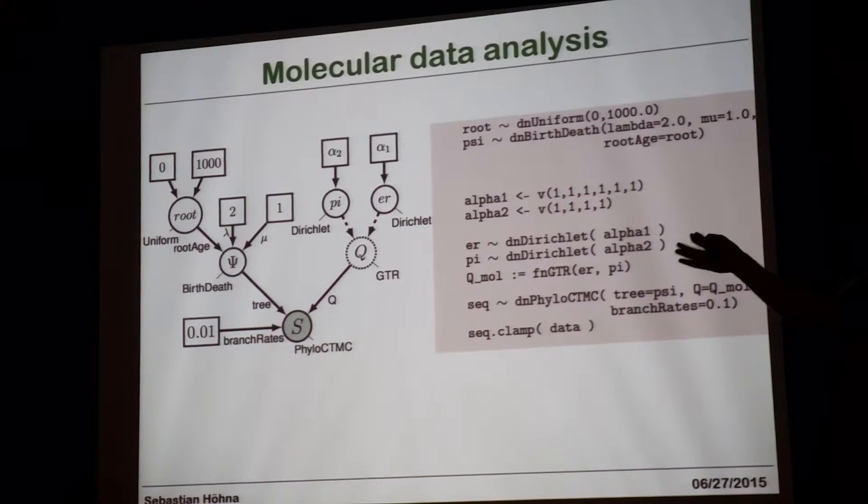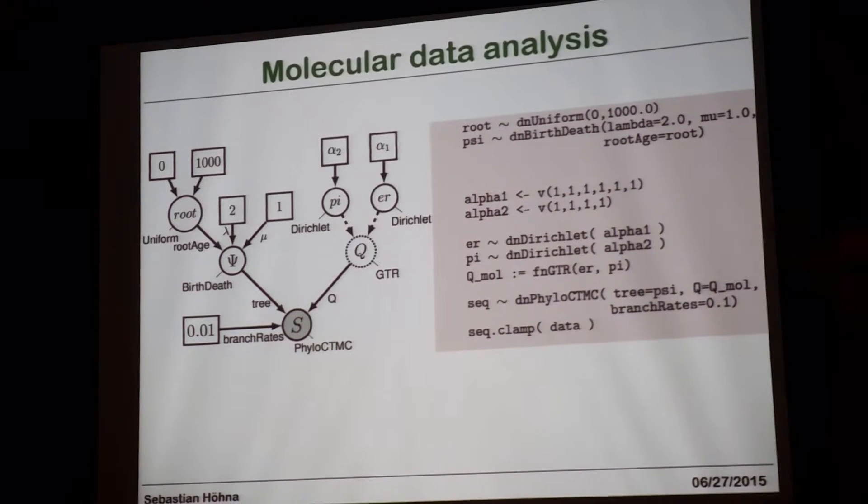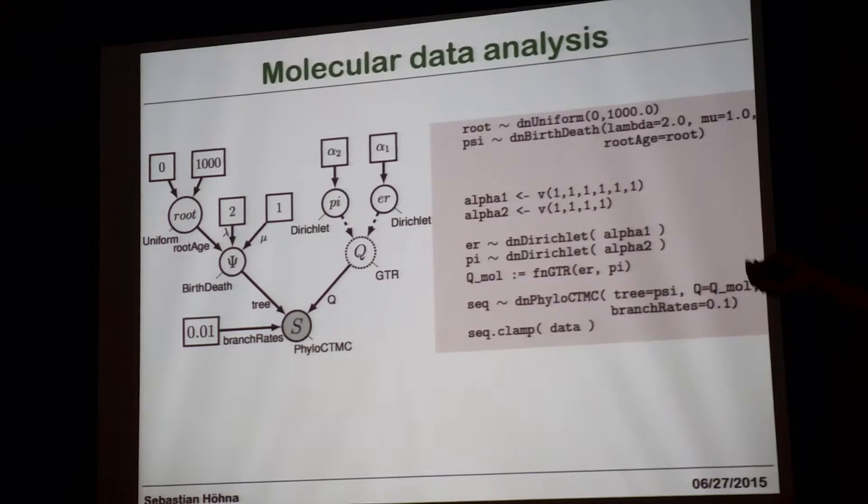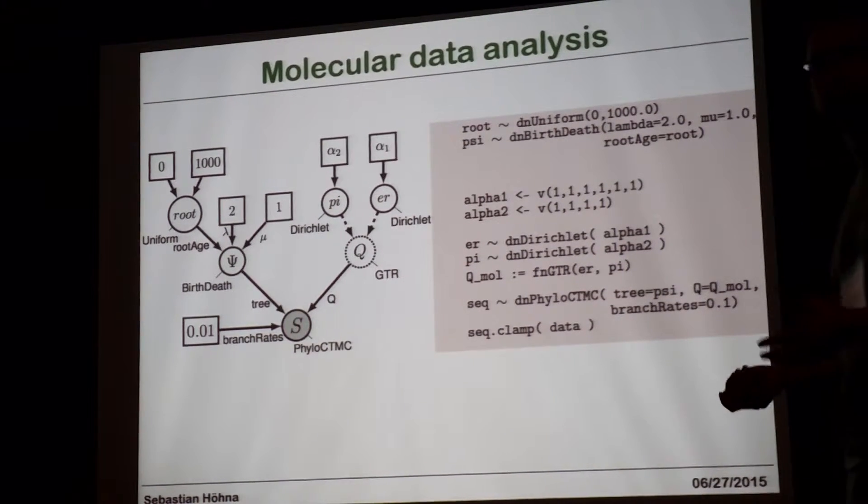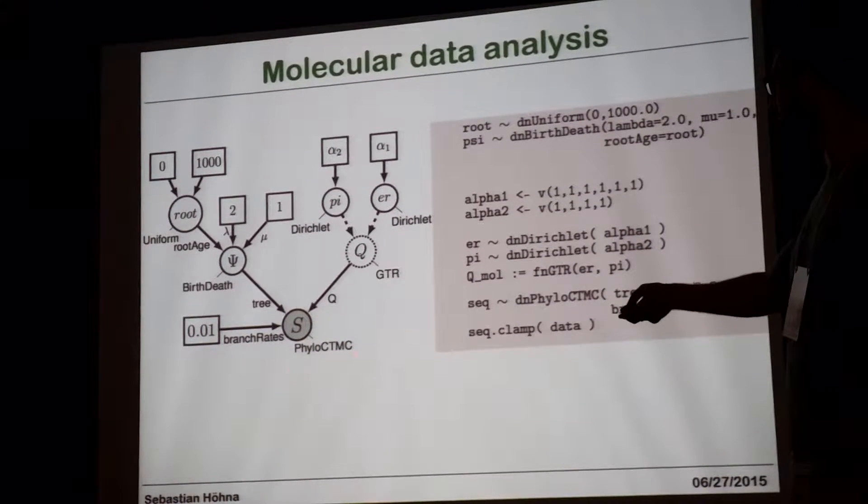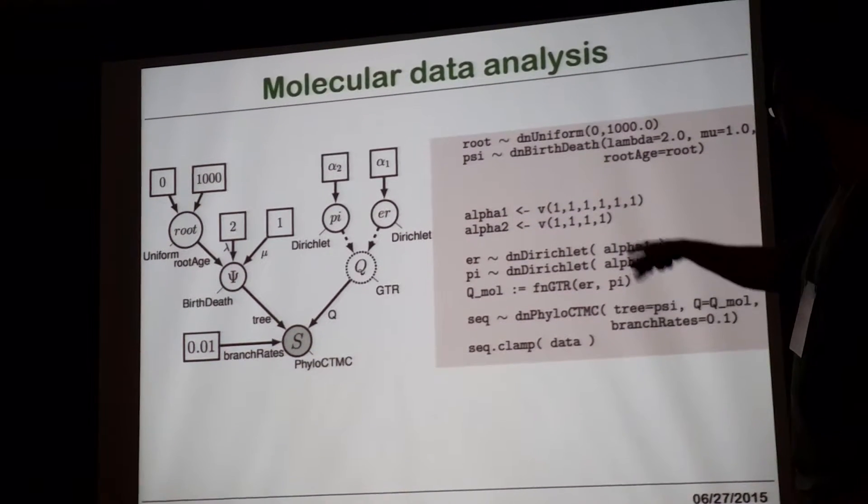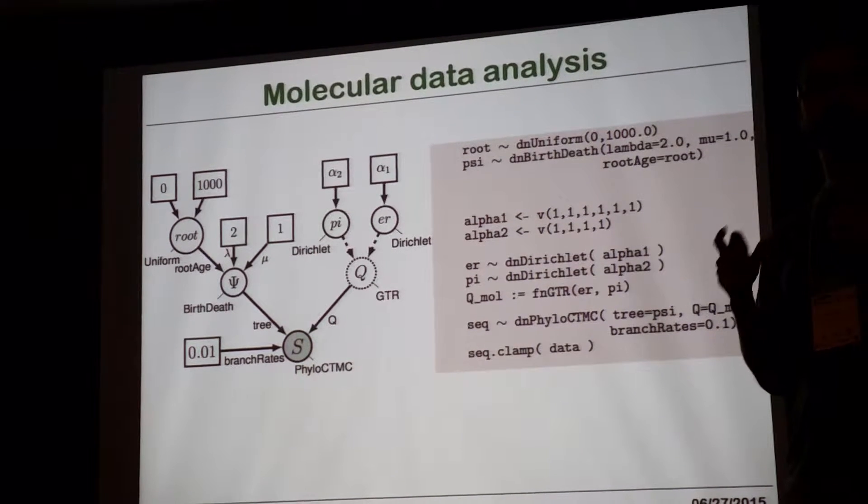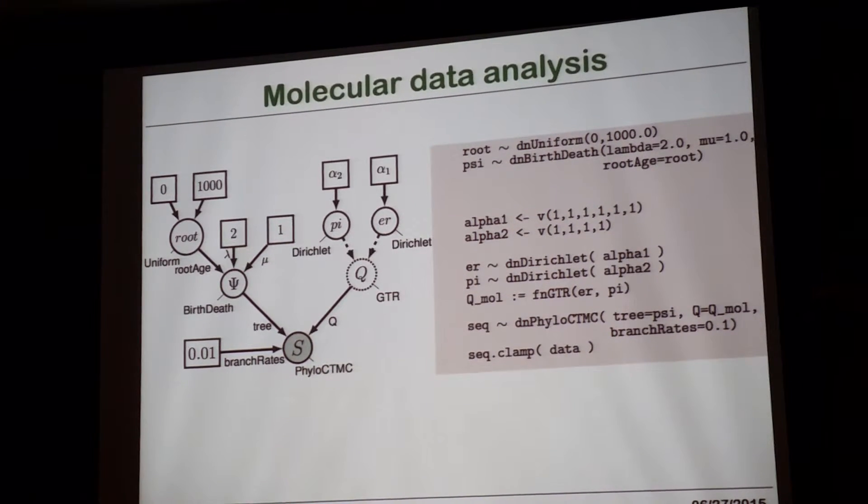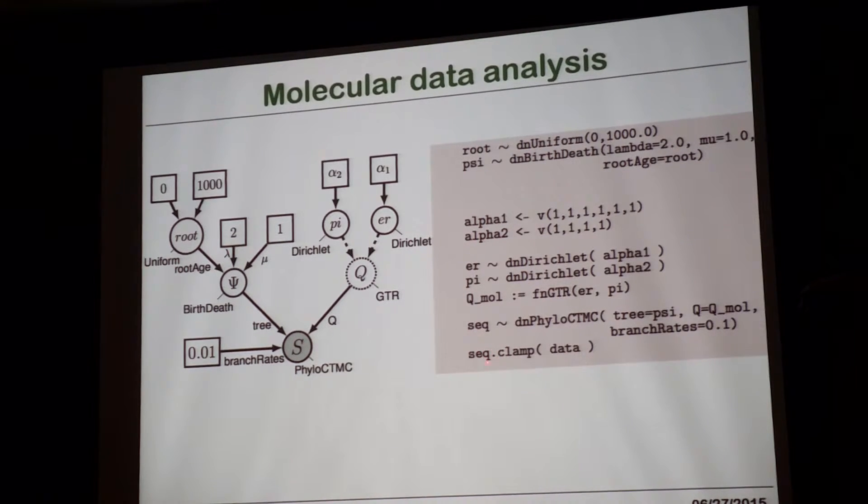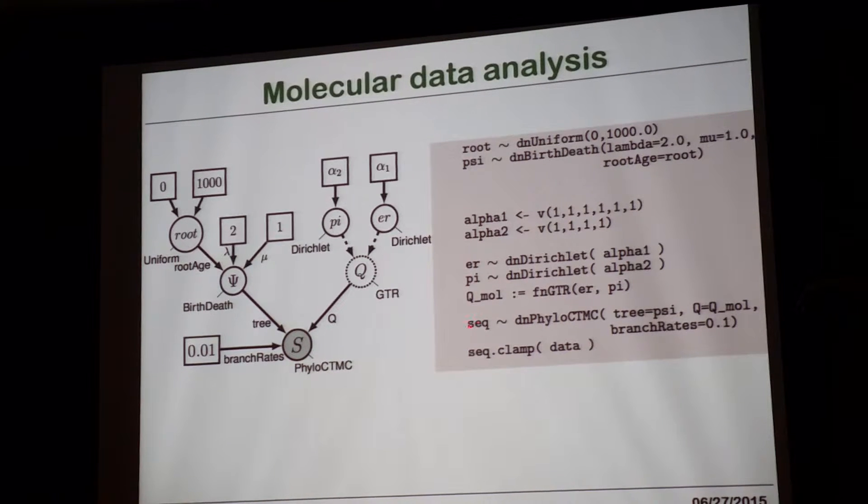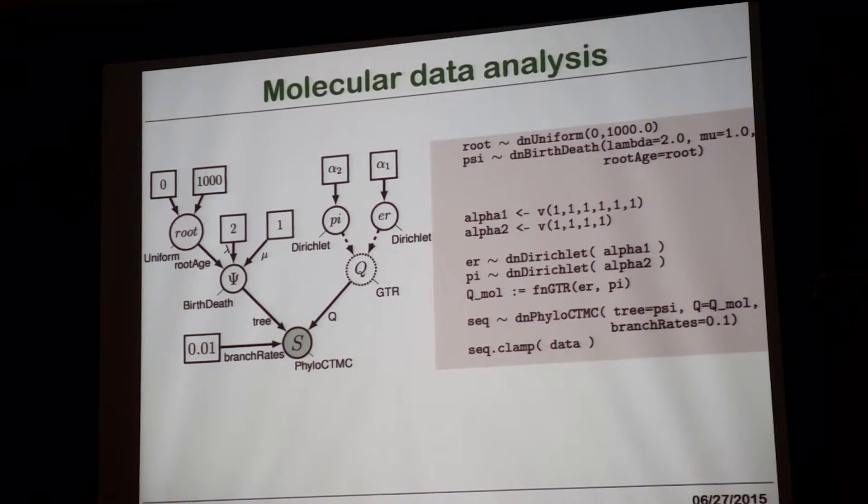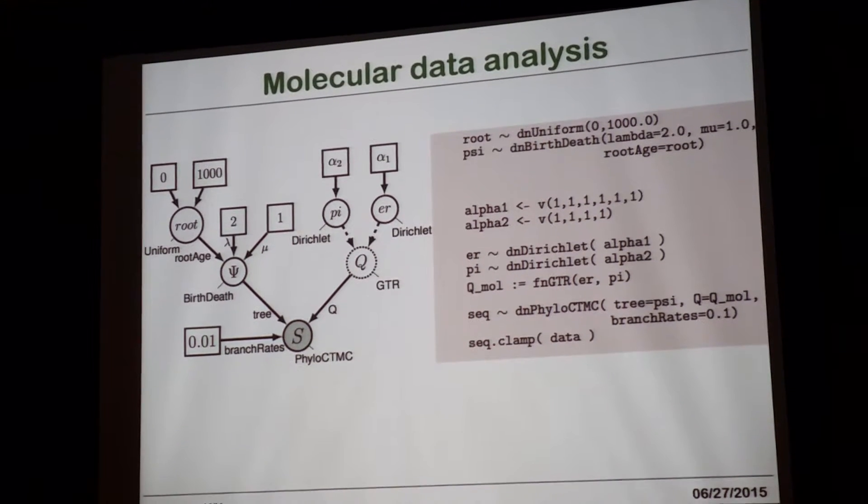The last variable that we have is the branch rate or clock rate being 0.01. In this little example, I really fixed it to being 0.01. And then we have seq, which stands for the sequence data. So that's a stochastic variable drawn from the PhyloCTMC. And that variable is shaded because it has data observed. You can see the corresponding part here that we're actually defining it has data attached to it. We clamp the data. So we created the sequence variable and then you just say .clamp attach the data.